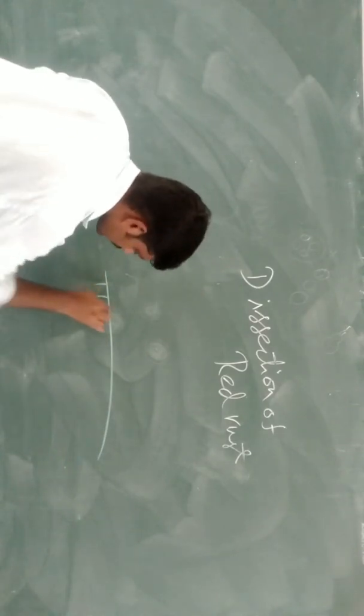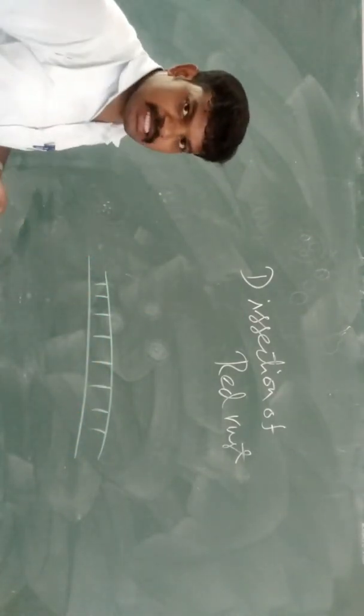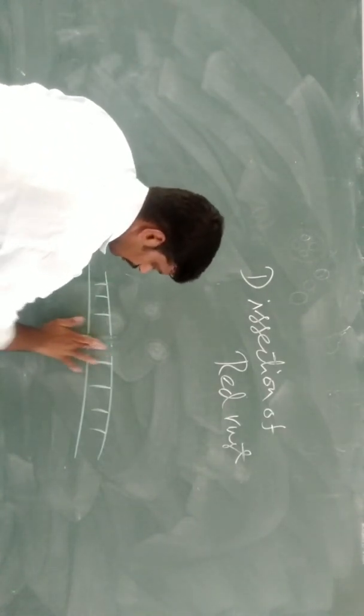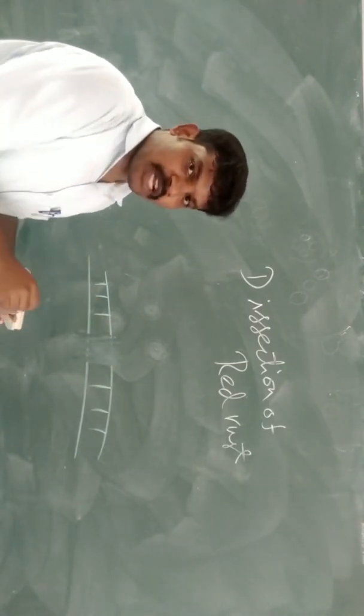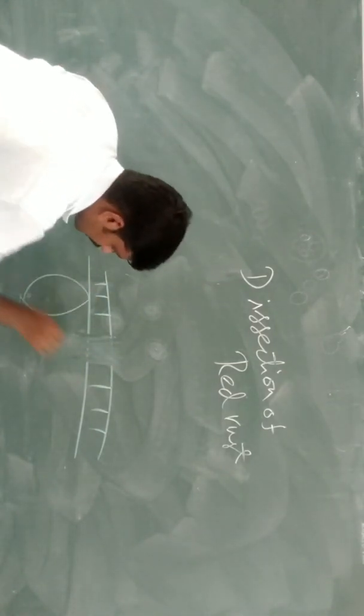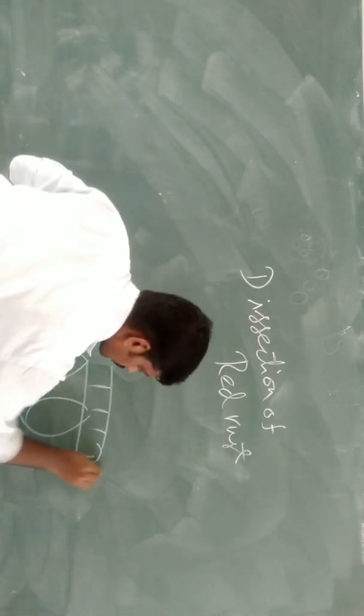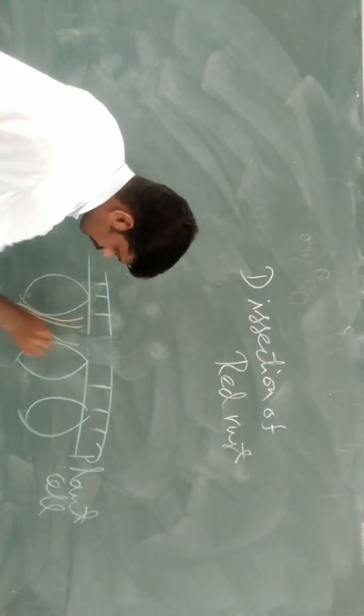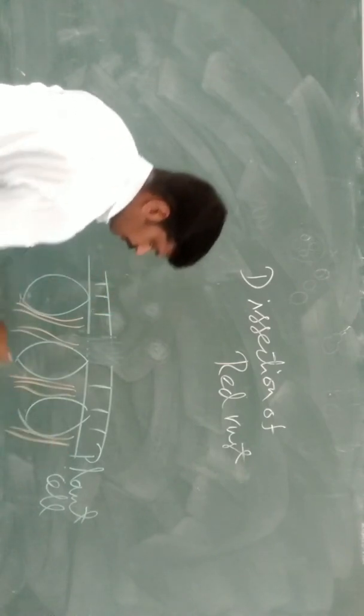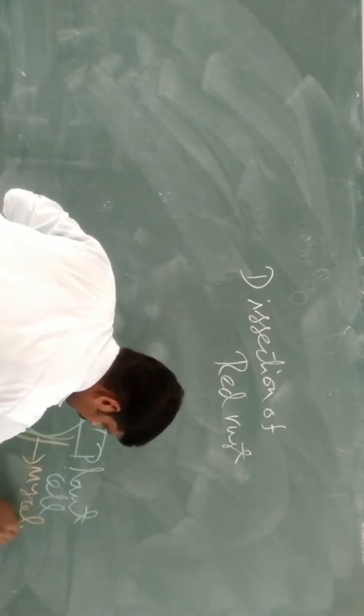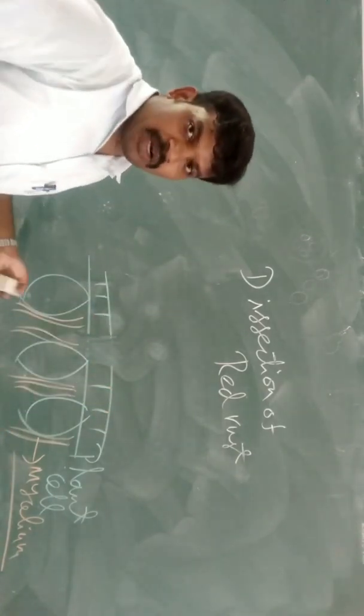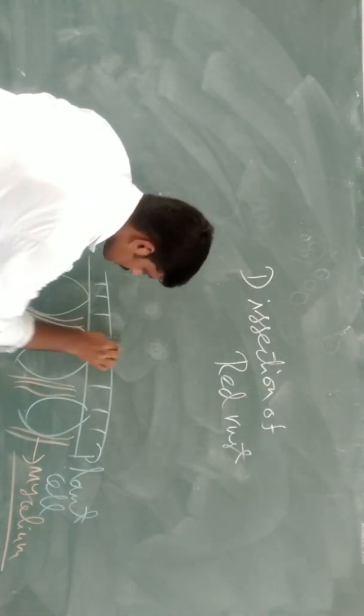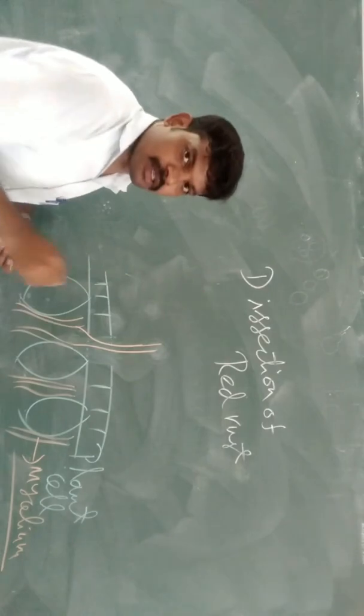Plant cell, green color, rust pathogen ruptures the epidermis cell. It will produce sporangiophore. This is plant cell. It will produce sporangiophore. Sporangiophore is there.